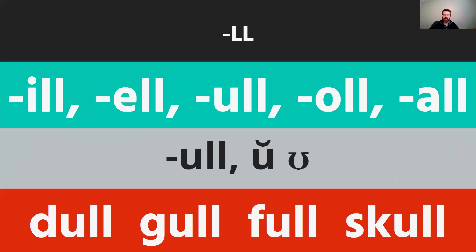However, with U double L there are two pronunciations. One uses the short U sound as predicted by phonetic skill two. The other is that high back sound as in 'book' — the 'uh' sound. Unfortunately, U double L can produce both sounds, and there isn't always a good way to predict which one it will make. Students just have to memorize which pronunciation each word uses. So we have 'dull' and 'gull' with the short U, but 'full' and 'skull' use more of the 'uh' sound.